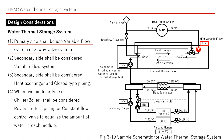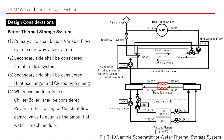The primary side shall use a variable flow system or three-way valve system. The secondary side shall be considered a variable flow system. The secondary side shall also be considered with a heat exchanger and closed-type piping.